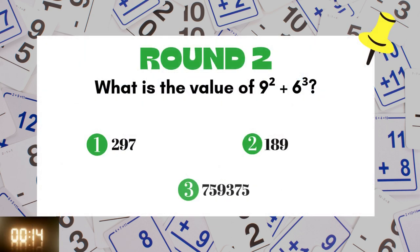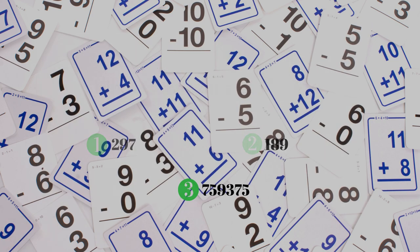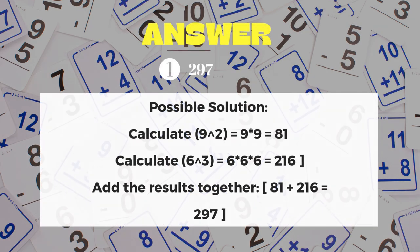Round 2: What is the value of 9 raised to power 2 plus 6 raised to power 3? The answer is 297.